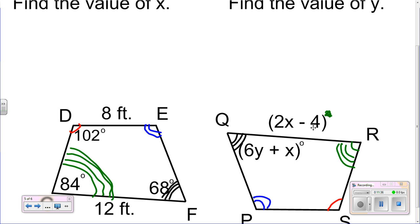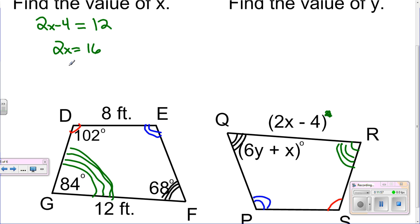So you just set this equal, 2X minus 4 equals 12. Add 4 to both sides, 2X equals 16. Divide by 2, X equals 8.